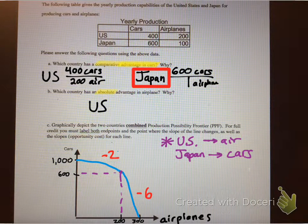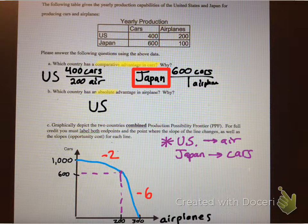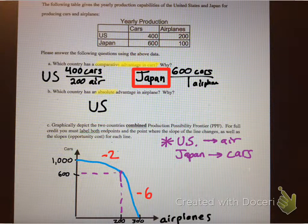But what does the slope represent? Well, the slope represents the opportunity cost. And this would be the combined PPF. So now they have a greater PPF, which means they can produce more of the goods if they decide to trade.